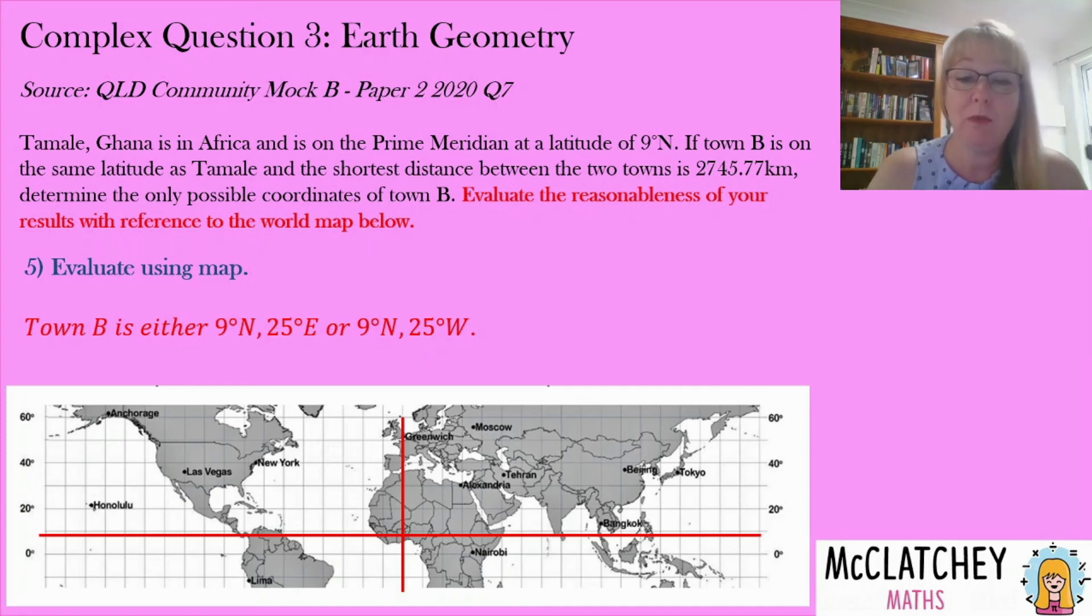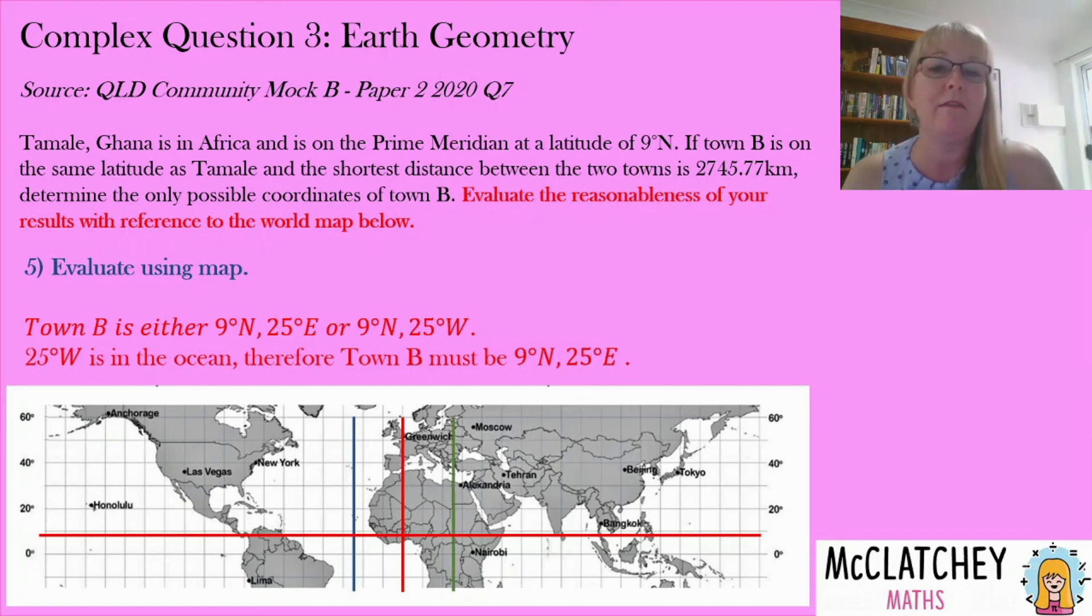So let's move over basically two and a half grid squares. That puts us right there in the middle of the ocean if we were to go in a westerly direction. So therefore it can't be that particular position. It's got to be to the east where I've got that green line and that's right in the middle of Africa. So town B has got to be nine degrees north. We knew that was going to be in common and it's got to be 25 degrees east.